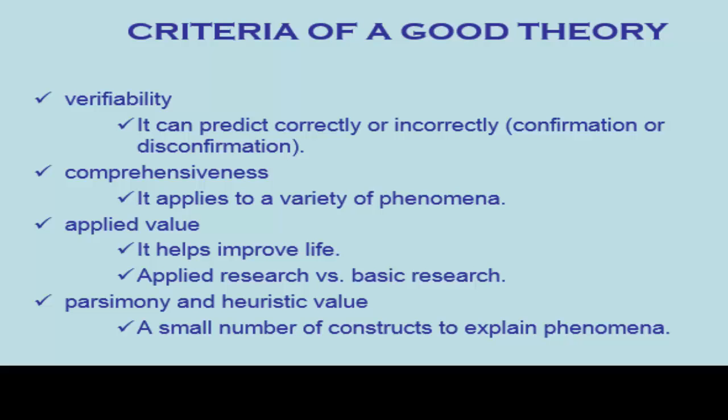The second criteria for a good theory is comprehensiveness. For me, a comprehensive theory refers to whether or not the theory accounts for a large variety of human behavior. A theory is no good if it only explains an individual's personality. However, if the theory is able to capture personality characteristics of many people or people across the globe, it becomes a very good theory.